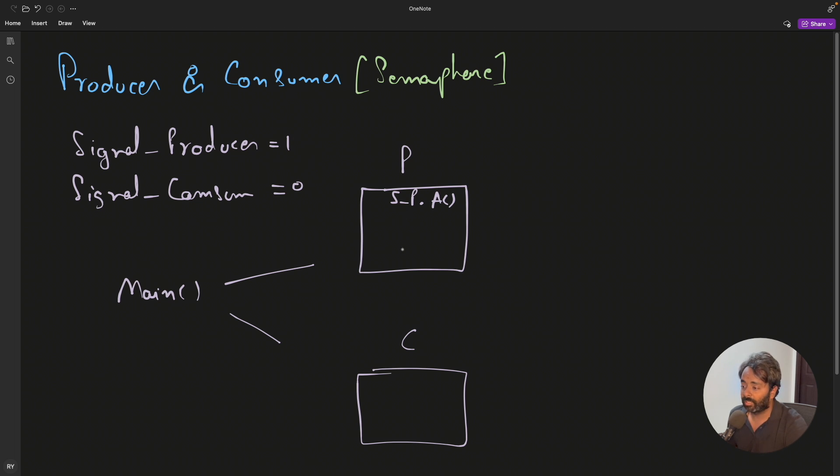Now to do that you have to say okay producer, you start first. So this is the reason we have to keep it one. And here signal_consumer.acquire will happen and the moment it will try to acquire, it is already zero, it will wait here, it won't go ahead. So this much portion is for consuming the job and then we'll say signal_producer.release. And after producing it will say signal_consumer.release.